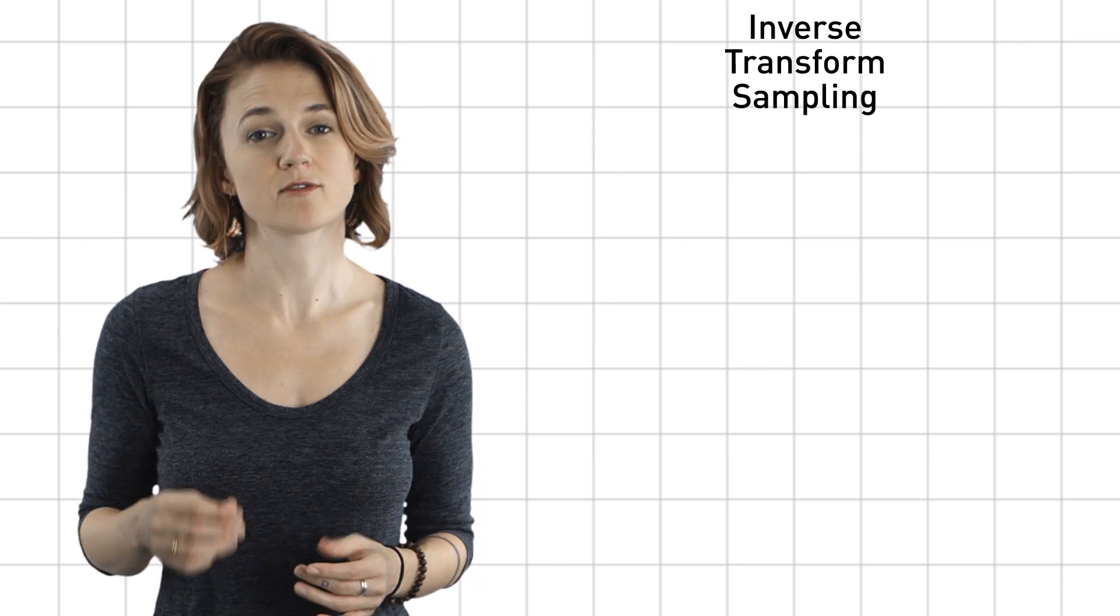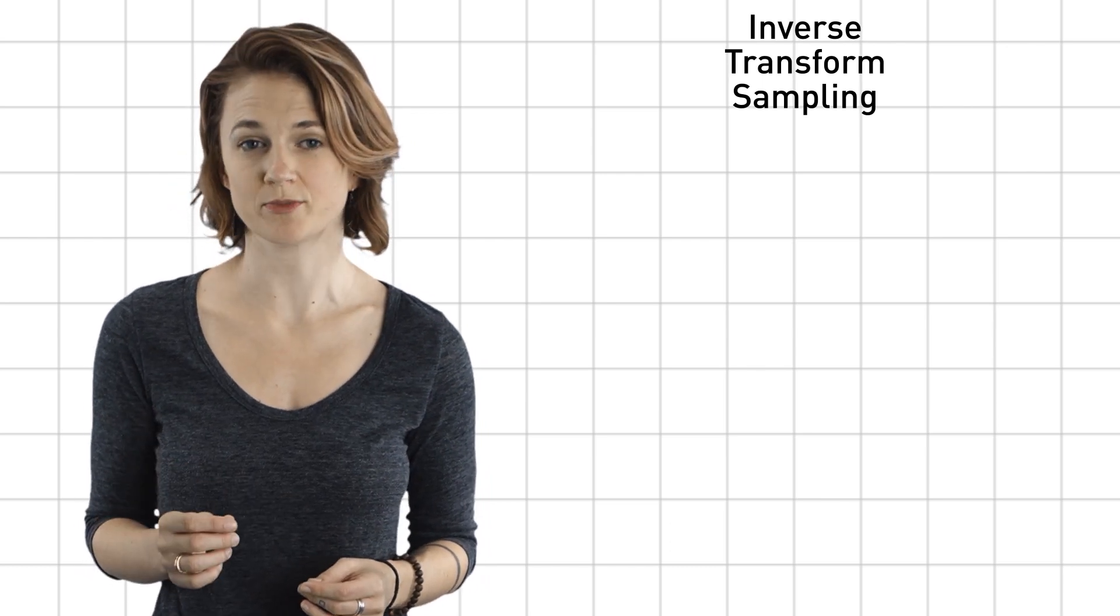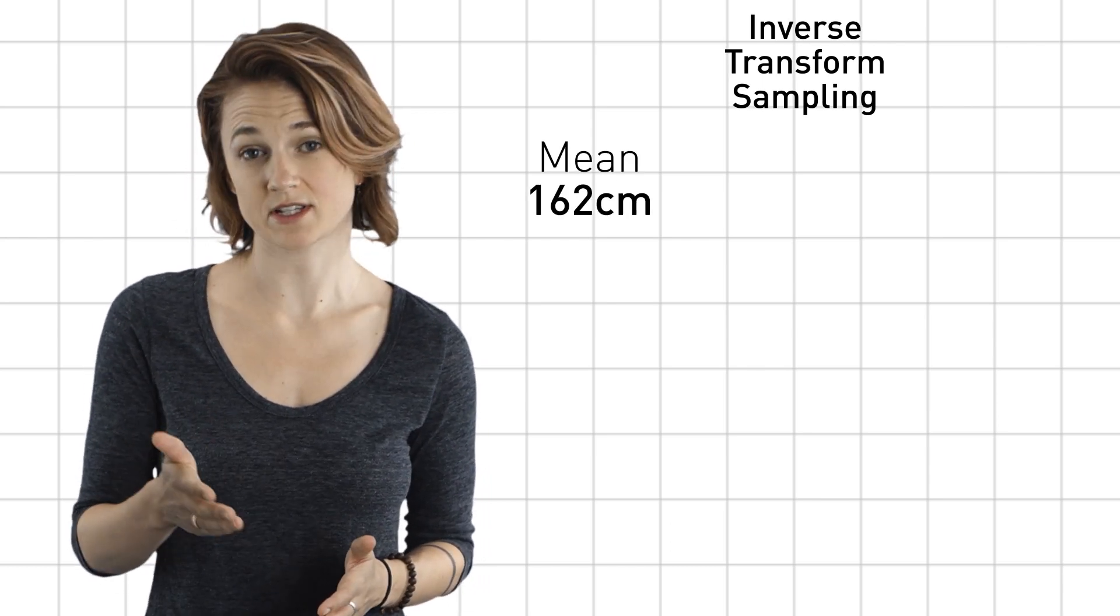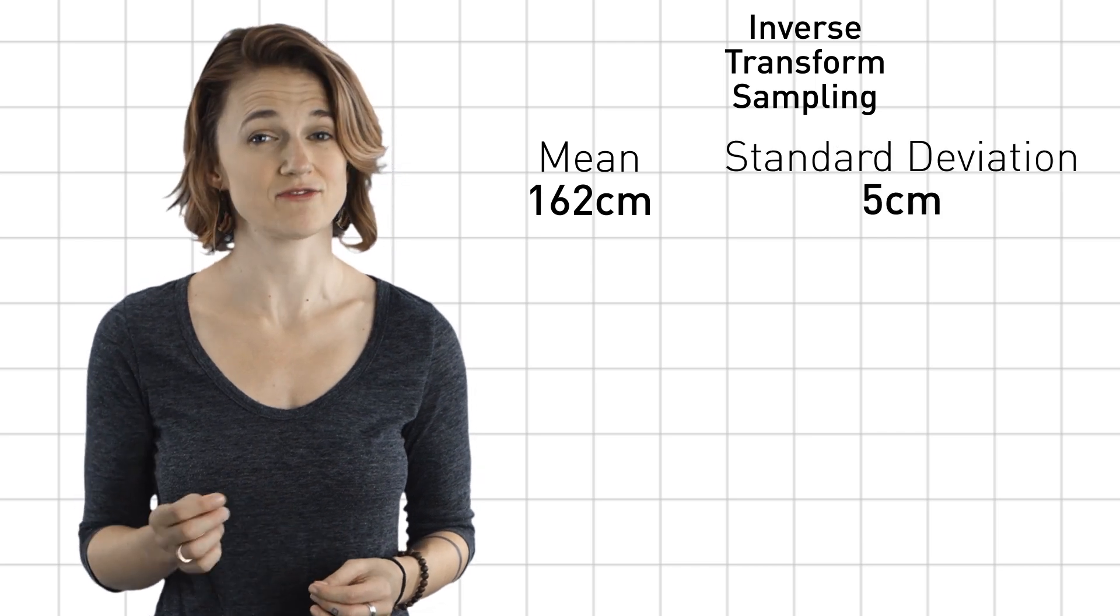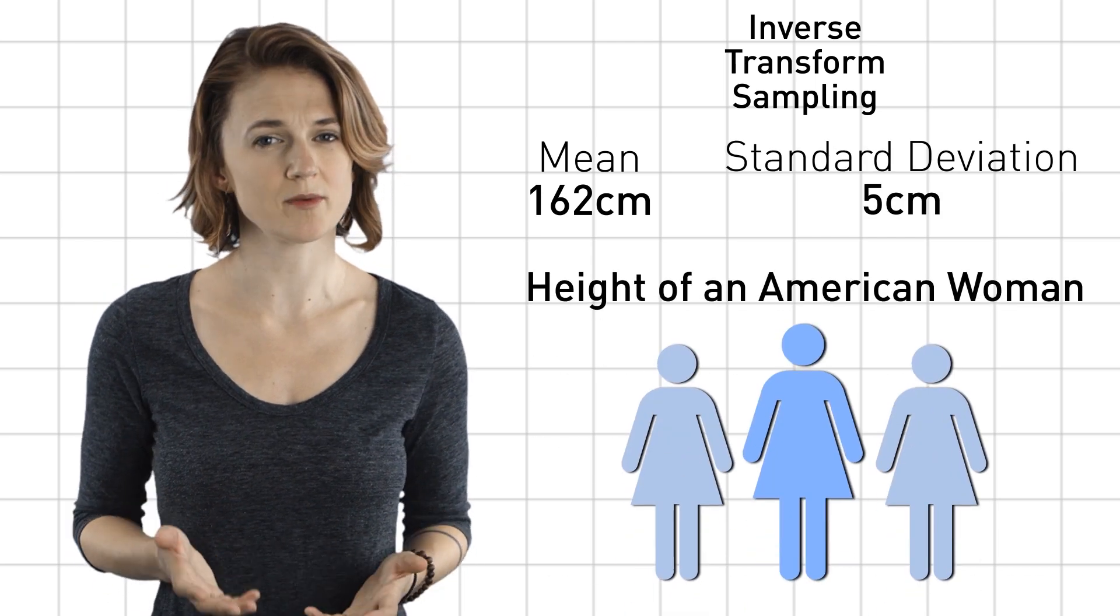Let's say we want to generate a sequence of random numbers with the normal distribution with mean 162 centimeters and standard deviation 5 centimeters to represent the height of an American woman.